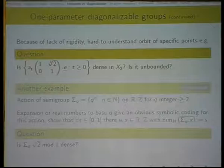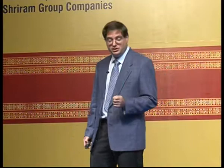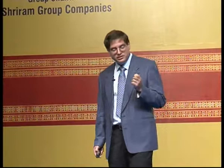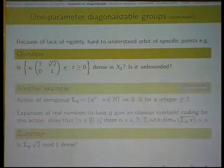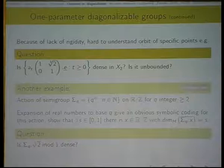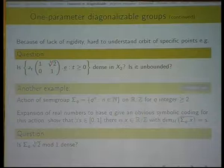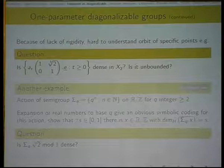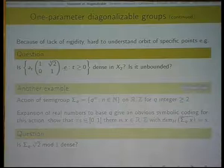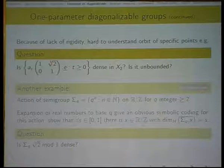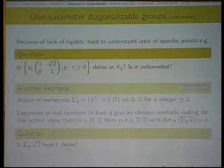Because of the lack of rigidity that points, each point behaves in a different way, it is very hard to understand the orbit of a specific point. So, if I give you a specific point which is not defined somehow in terms of continued fraction expansion, it would be very hard to say something intelligent about its orbit. So, here is a concrete example. I take a lattice generated by the standard vector 1, 0 and by the vector cube root of 2 and 1. This is a lattice. I take its orbit under the diagonal group. In one direction, so A_T times this lattice where T goes to minus infinity, this just escapes straight to the cusp. In the other direction, I don't know how to say much about this orbit. So, is this orbit dense? Is this unbounded? That's very hard because this question of whether this half orbit is unbounded is equivalent to whether the continued fraction expansion of cubic root of 2 is bounded. A well-known open problem.